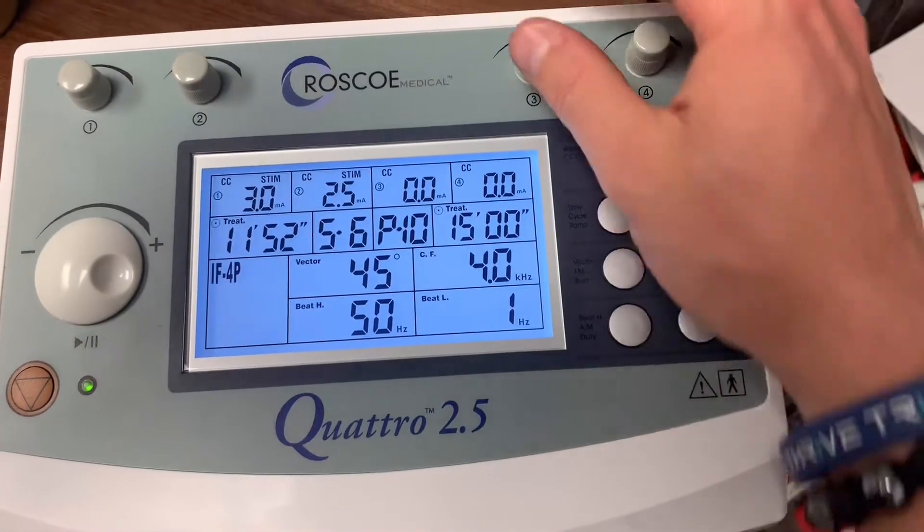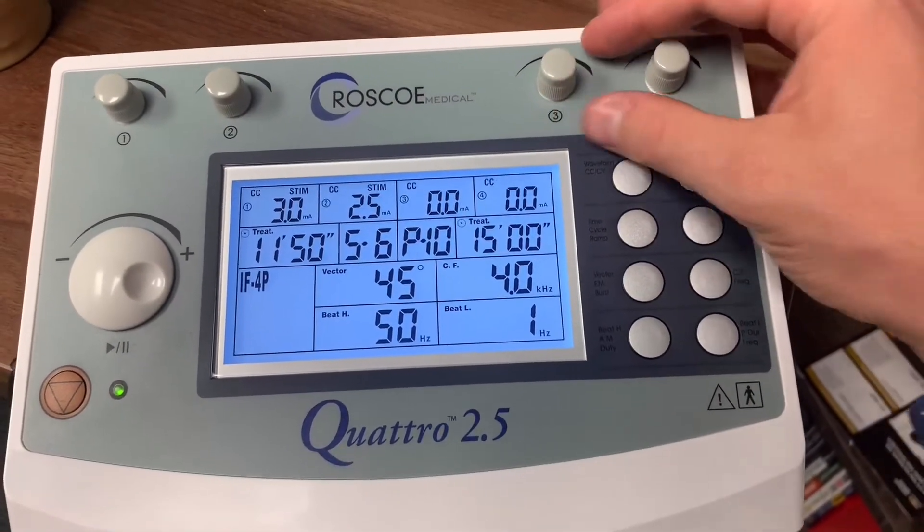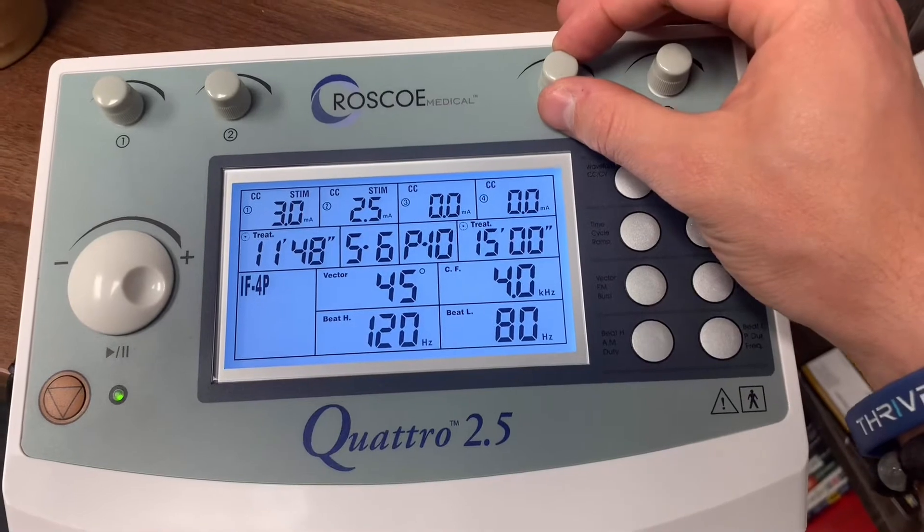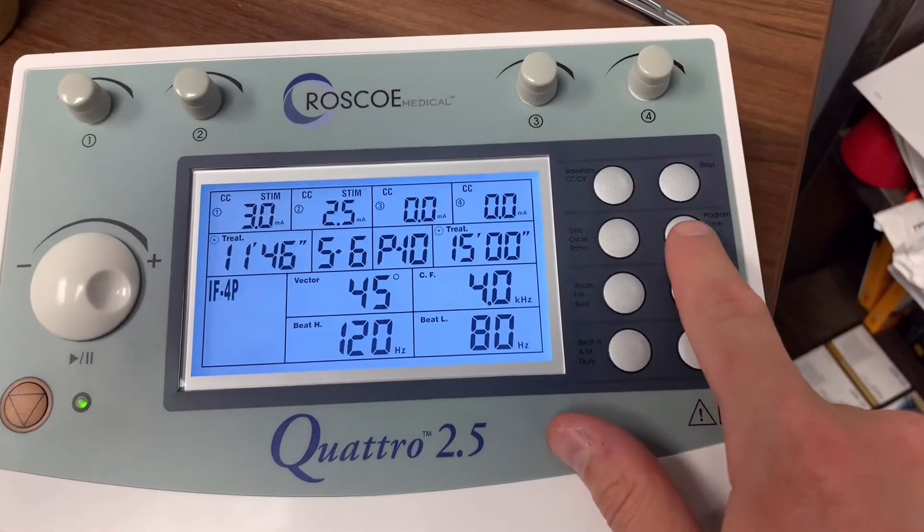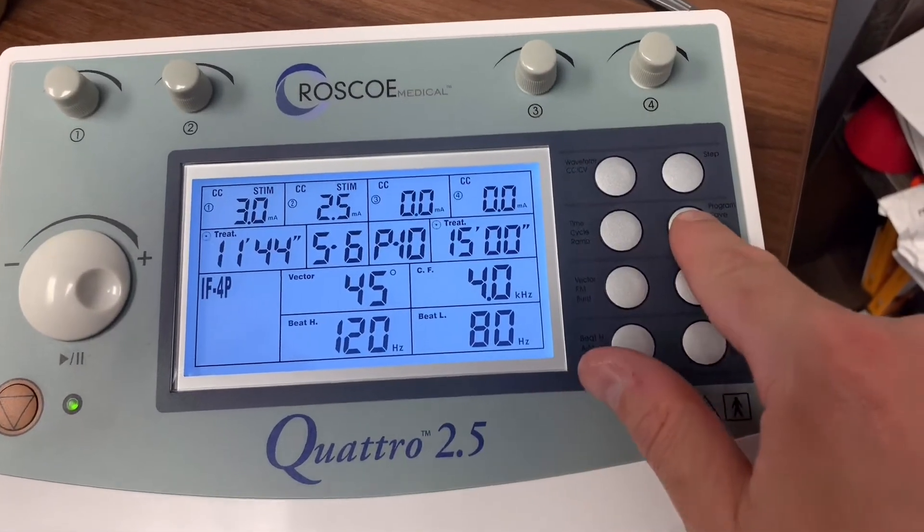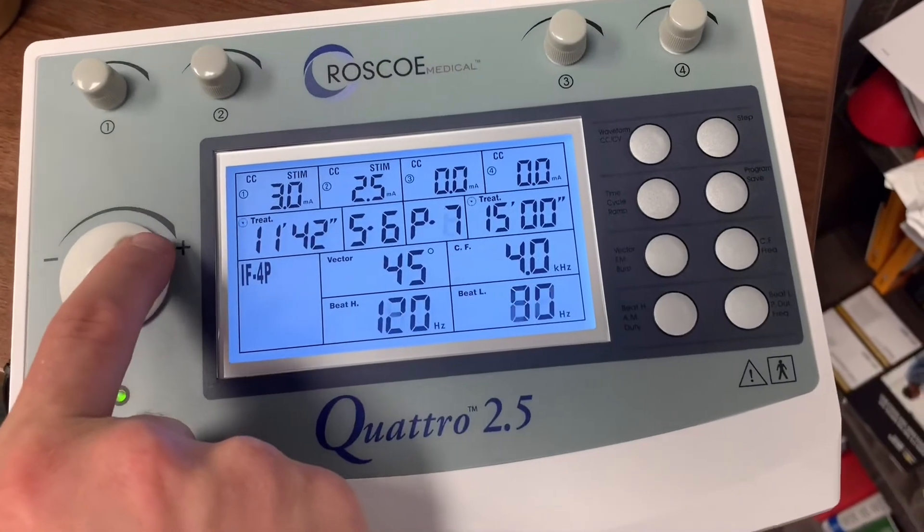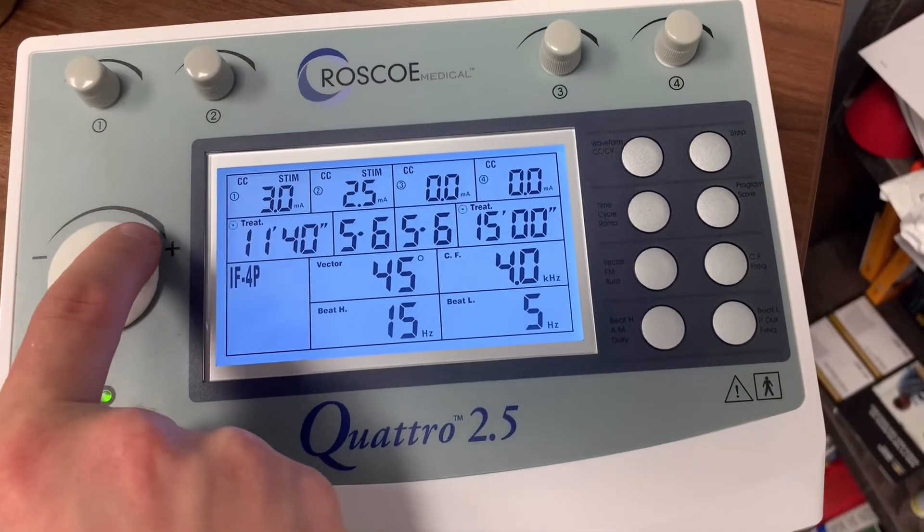Then what we're going to do is grab this knob for 3 and 4, and then we're going to stop it. So now we're going to save this. We're going to hit program, we're going to go to channel 6.